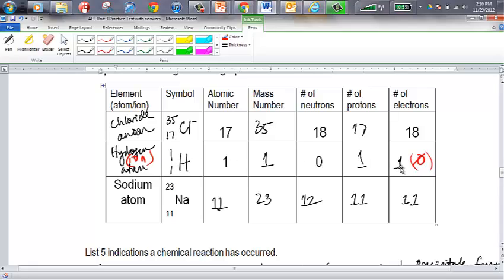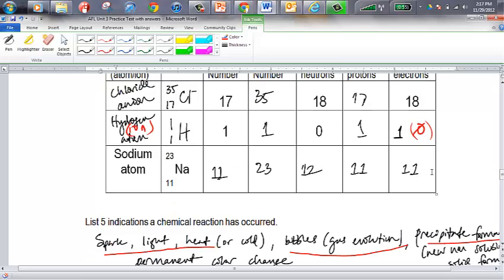This would be a hydrogen atom if you make this number equal to 1 over here. You could call it a hydrogen cation if you make this number equal to 0 over here. A sodium atom, of course, would have all of these numbers.